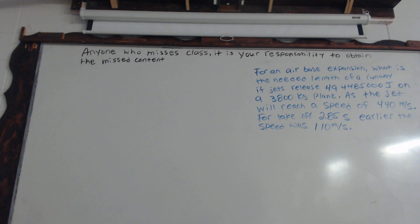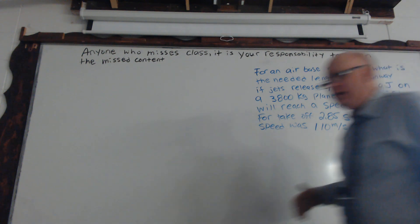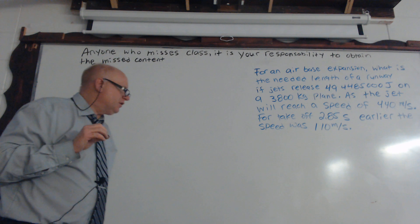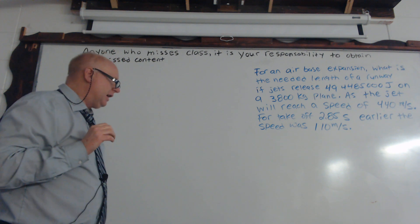It's saying for this jet expansion, or excuse me, for this base expansion, they need a length of a runway if the jets release 494,485,000 joules on a 3,100 kilogram plane as the jet will reach a speed of 440 meters per second. Now that's not right at takeoff, it's just the idea of we want to take these numbers and see if it's coming in at full speed, which it probably wouldn't. If it needed to make an emergency landing maybe, but we're again just going where the numbers lead us. And then for takeoff, 2.85 seconds earlier, the speed was 110 meters per second.